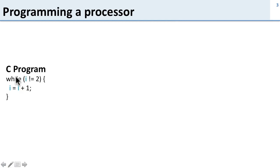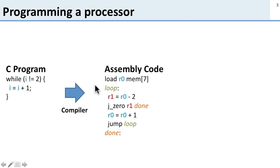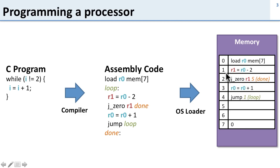Before we get into that, let's review how a processor is programmed. Here we have a C program — it's a simple loop: while I is not equal to 2, we're going to increment I. The first thing that happens to run this program is you need to compile it. The compiler takes this description of the program and converts it into a low-level assembly description using the instructions of the processor. This is then put into an operating system loader which loads the program into memory, where you can see the instructions have been loaded into particular addresses.